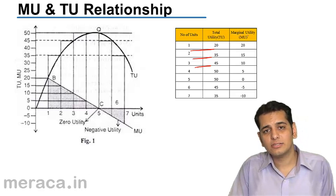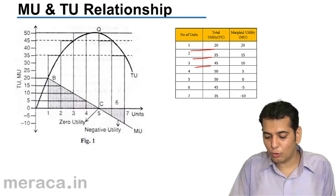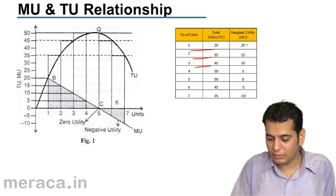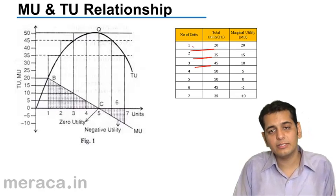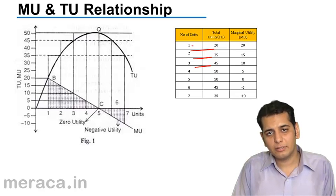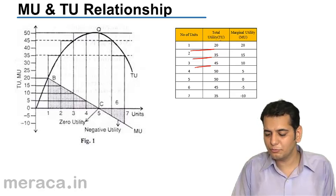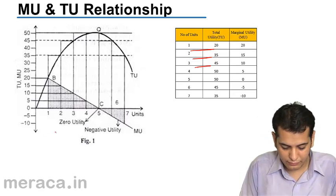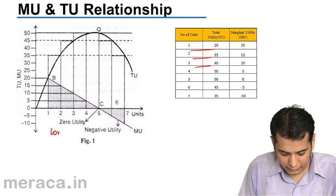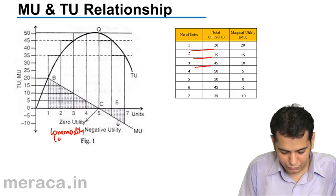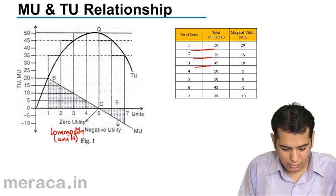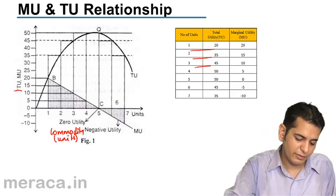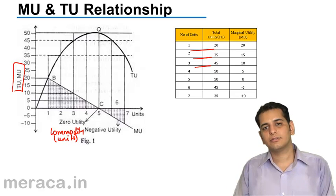What we'll do is we'll plot the points on a graph. We take marginal utility and our coordinates will be 1 and 20. 1 is the commodity, the number of commodities that we are consuming, and 20 is the marginal utility. On the x-axis, we have commodity in units, and on the y-axis, we have MU and TU.